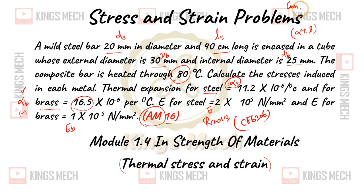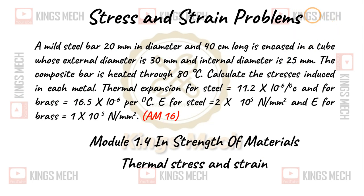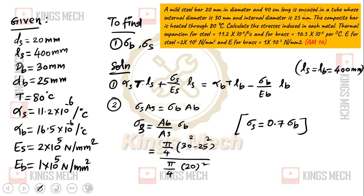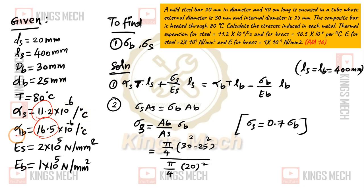This is the compound bar formula: plus or minus sigma by E into L. The difference between the steel value and the brass value — the highest expansion is brass.